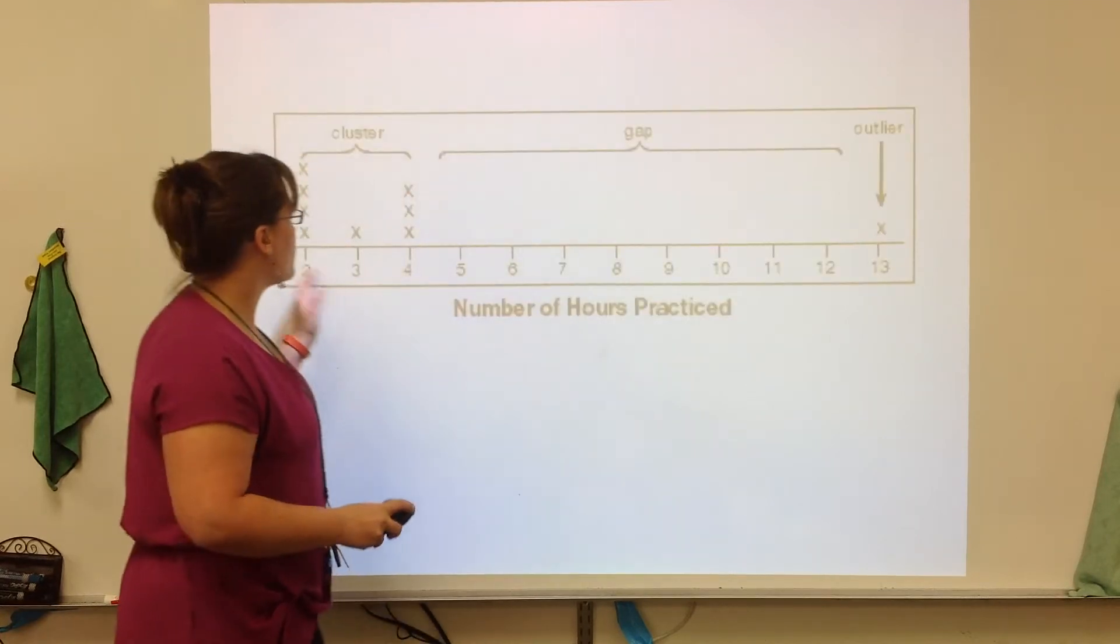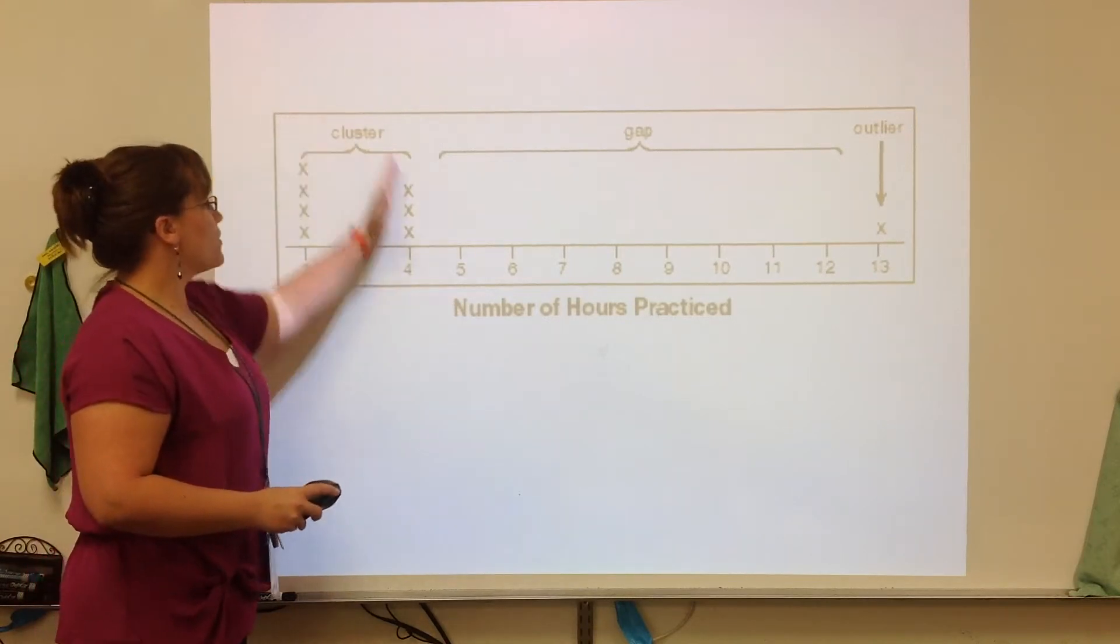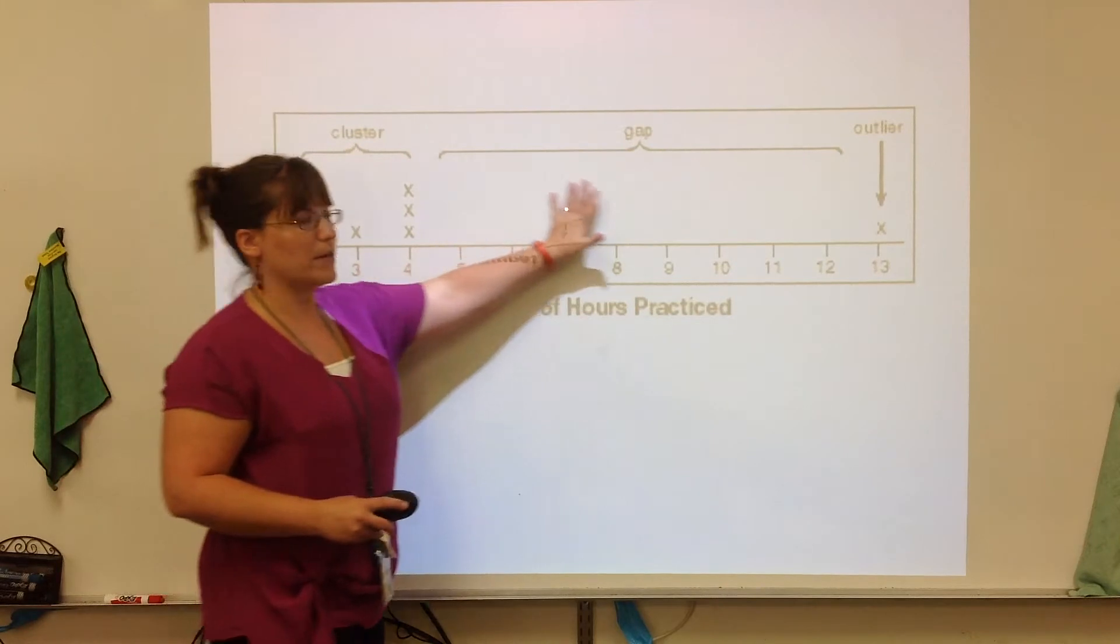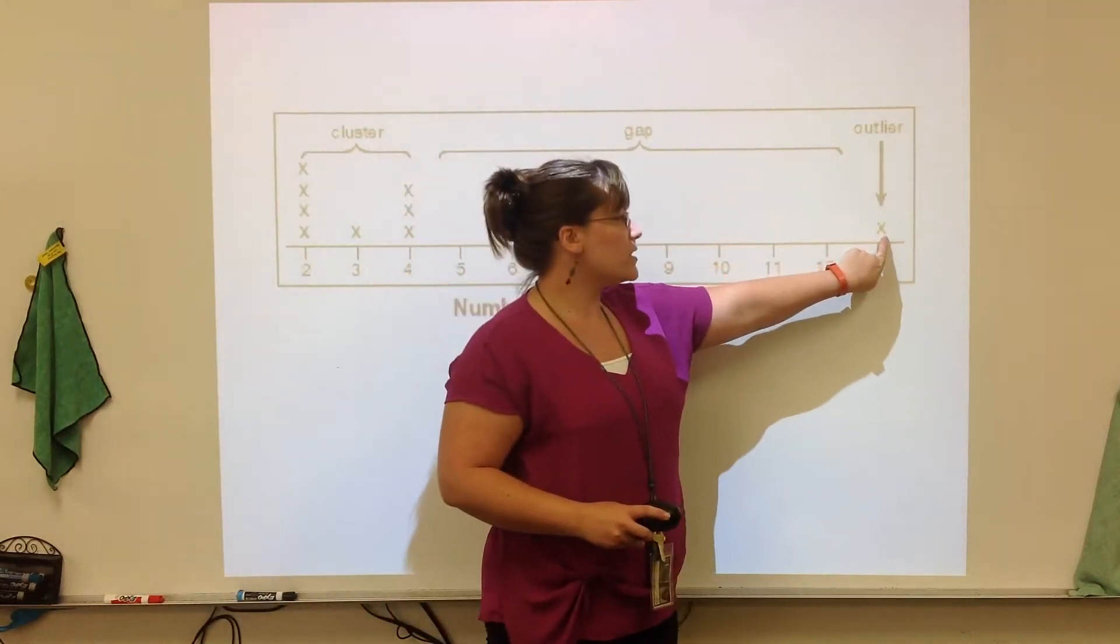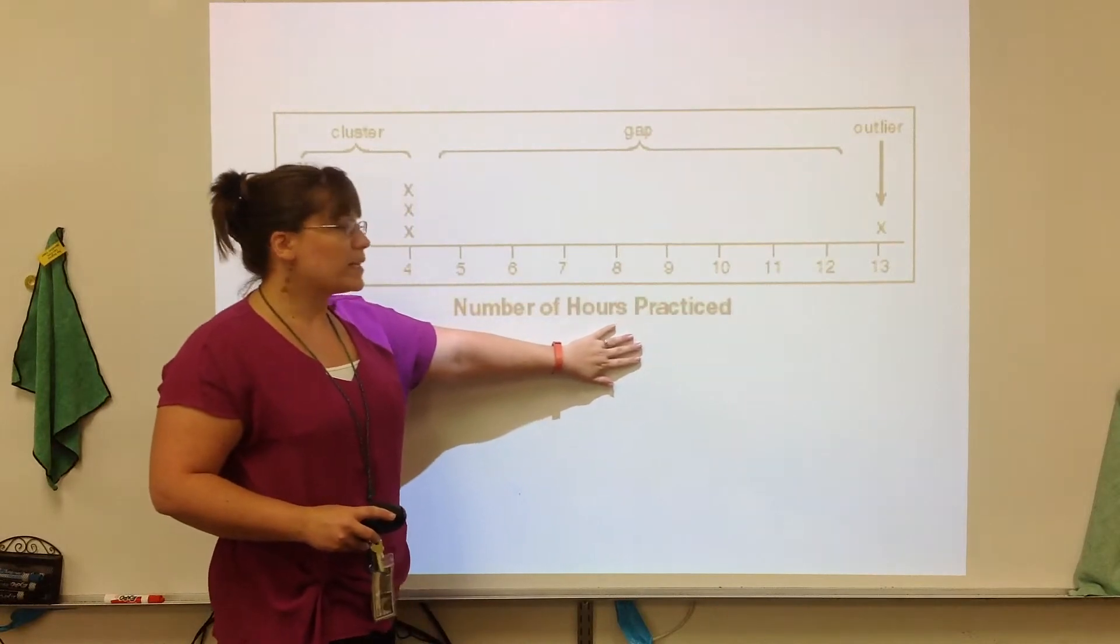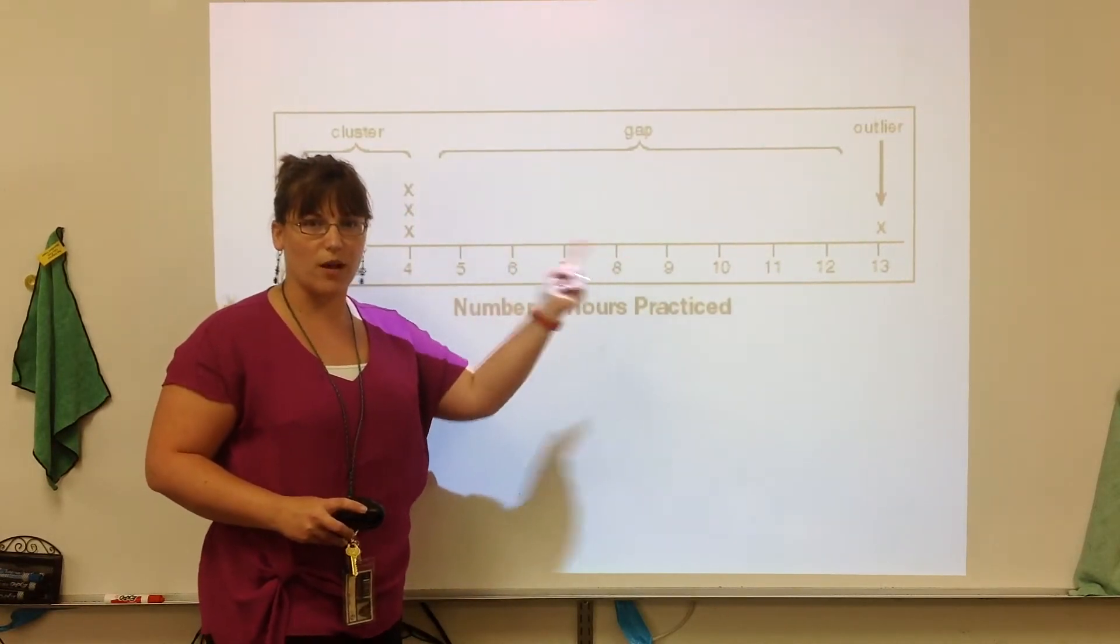Another example of a line plot, similar to what you've seen before. Here, all of the x's are clustering in this certain area. Then there's this big gap, and it's very easy to see this outlier over here. The reason why we like using line plots is that we can see right away, ooh, there's an outlier over there.